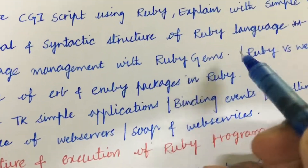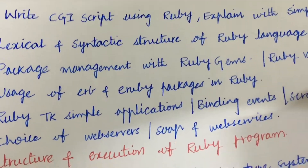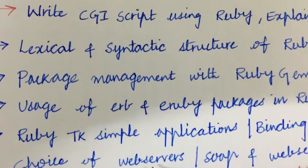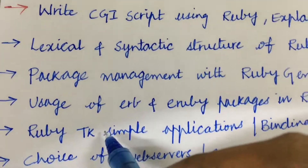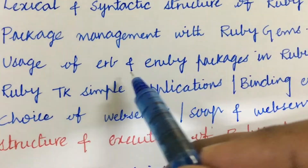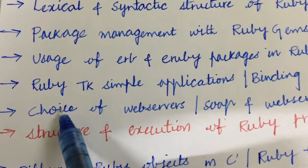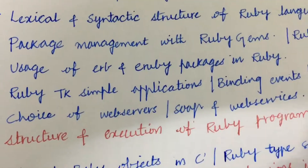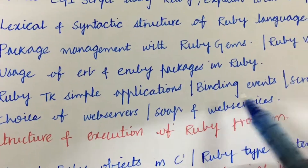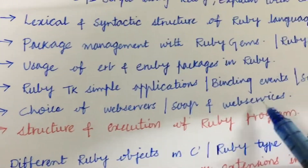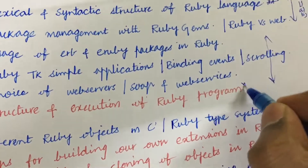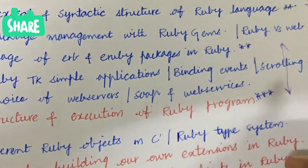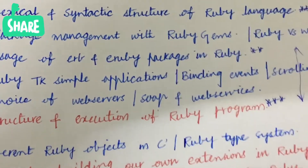Package management with Ruby Gems and Ruby versus web are also important. From these concepts we can expect 1a as well as 1b — do not expect a direct 15-mark question; it is a combination of 7 and 8, or 10 and 5 split. Later, usage of ERB and eRuby packages in Ruby, Ruby/Tk simple applications, binding events, scrolling, choice of web servers, SOAP and verb servers, and the structure and execution of Ruby programs are also important. From these concepts we can expect 2a and 2b.